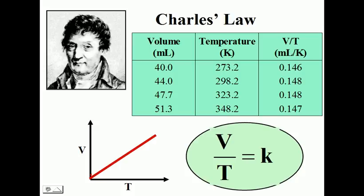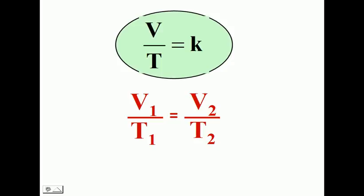Charles' experiments took many gases, and as the temperature of those gases increased, the volume also increases. The mathematical relationship shows that if you take volume over temperature, you will get, within experimental error, a constant value.